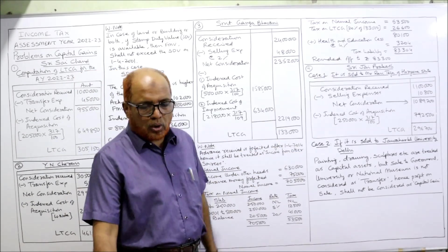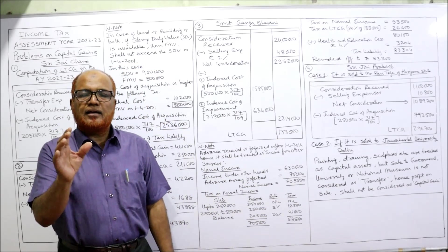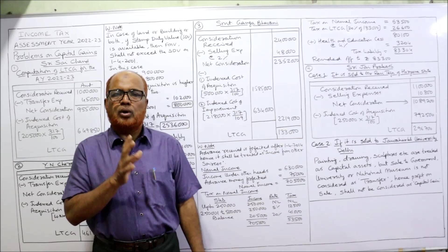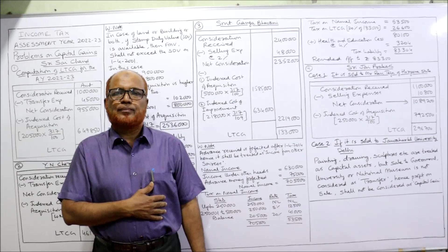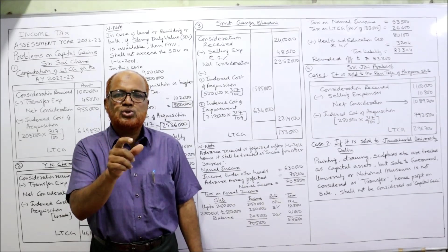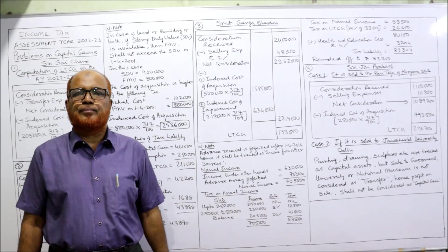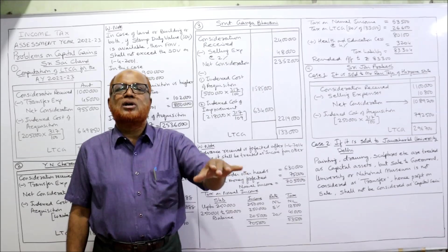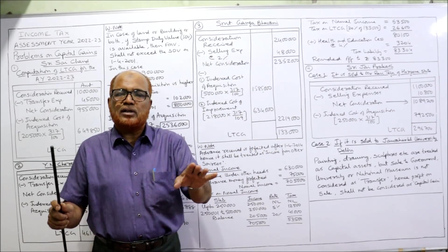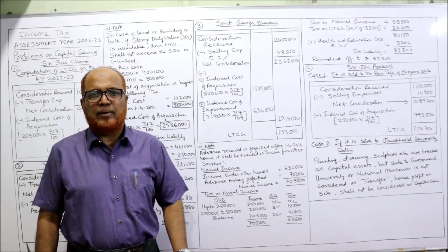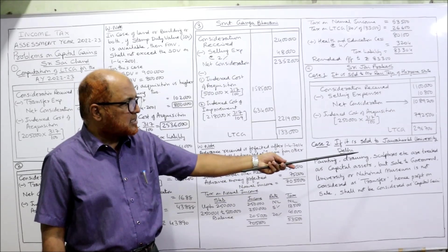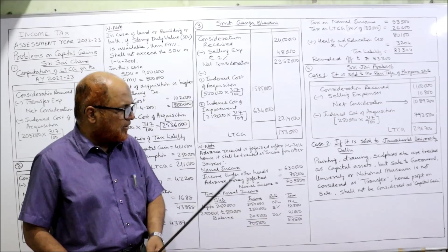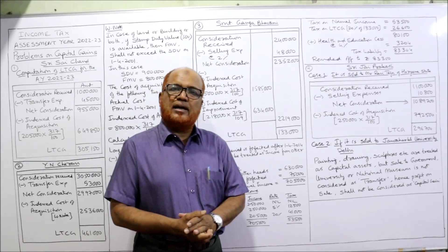Case 2: if sold to Jawaharlal Nehru University, Delhi. The Income Tax Act provides that if sculptures, paintings, or drawings are sold to the government, a university, any approved institution, or a national museum, then it is not considered a transfer. So the gain arising on sale of these assets to the government, university, or national museum is not taxable. Paintings, drawings, sculptures are treated as capital assets, but sale to the government or university or national museum is not considered a transfer — hence profit on such sale shall not be treated as capital gain.